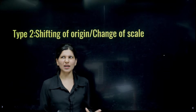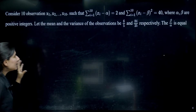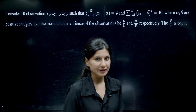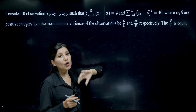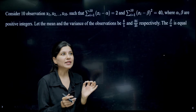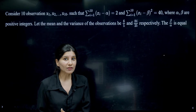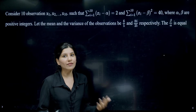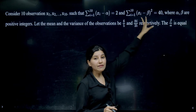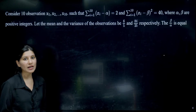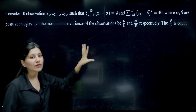Now let us move on to the next type: shifting of origin or change of scale. Don't worry — this is not like straight lines. In this type of problem, they give normal observations X1, X2, ..., X10, then talk about updated observations where something has been added, subtracted, multiplied, or divided. Here, alpha has been subtracted from one set and beta from another. They give information about the original observation and ask about the updated one.